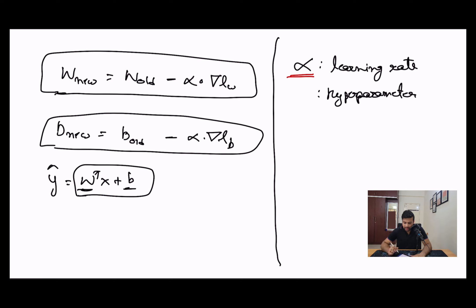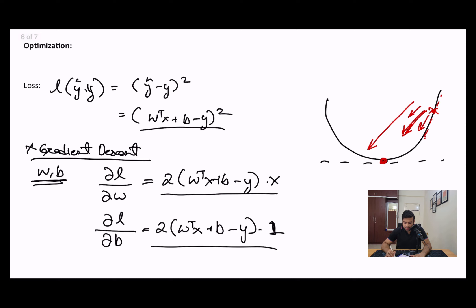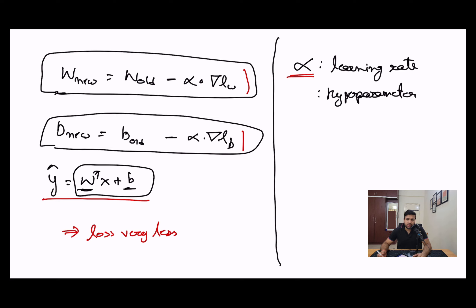This concludes the theory part of linear regression. Just to recap quickly: linear regression is formally defined with input tensor X, output Y, parameters W and B forming your linear equation. The loss function is (Y hat − Y) squared. When you optimize it, you compute partial derivatives with respect to W and B, then use those to update your weight and bias parameters. You continue this cycle until the loss is below a certain threshold, at which point you've reached the maximum accuracy your model can achieve with that dataset. We also discussed what learning rate is and how to fine-tune it through trial and experimentation.